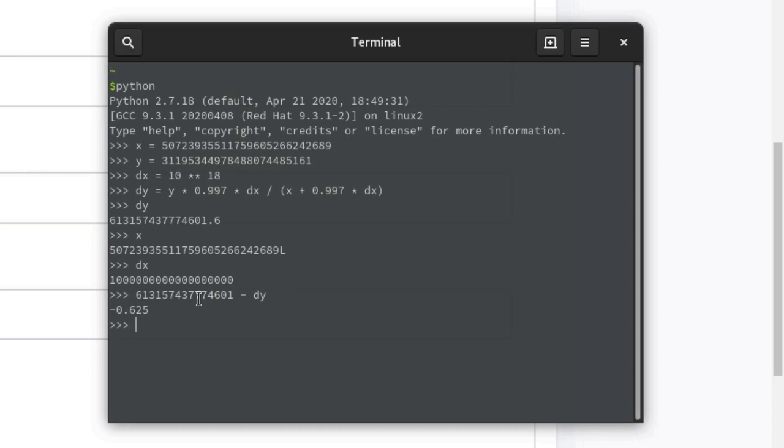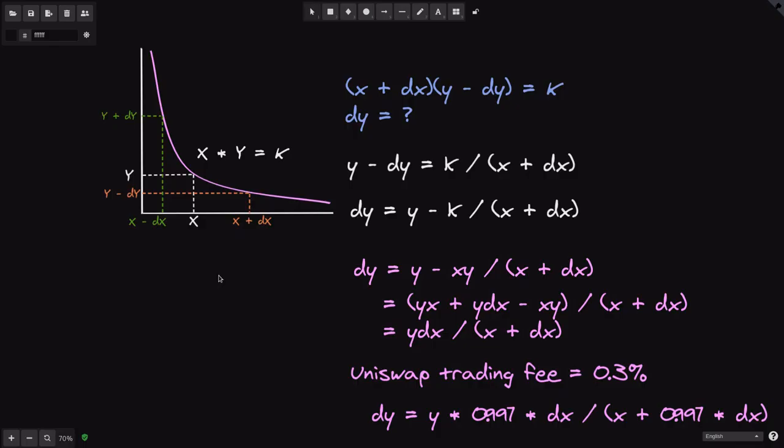Back inside Python shell, I've subtracted the actual amount that Uniswap gave us back with the amount that we calculated. And the difference is 0.625. Numbers are rounded down in Solidity. So basically, the difference is equal to 0.